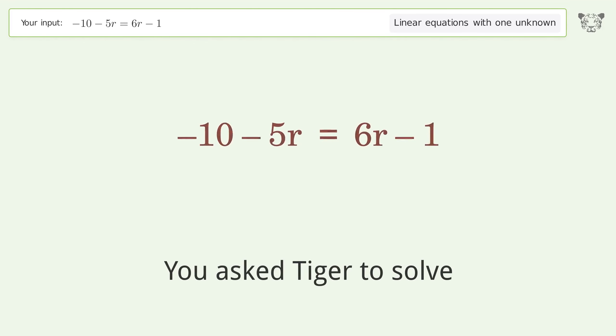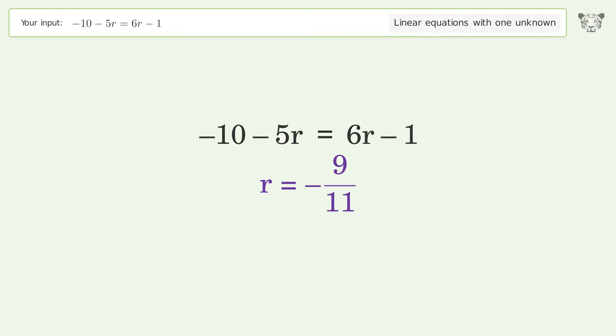You asked Tiger to solve this. This deals with linear equations with one unknown. The final result is r equals negative 9 over 11.